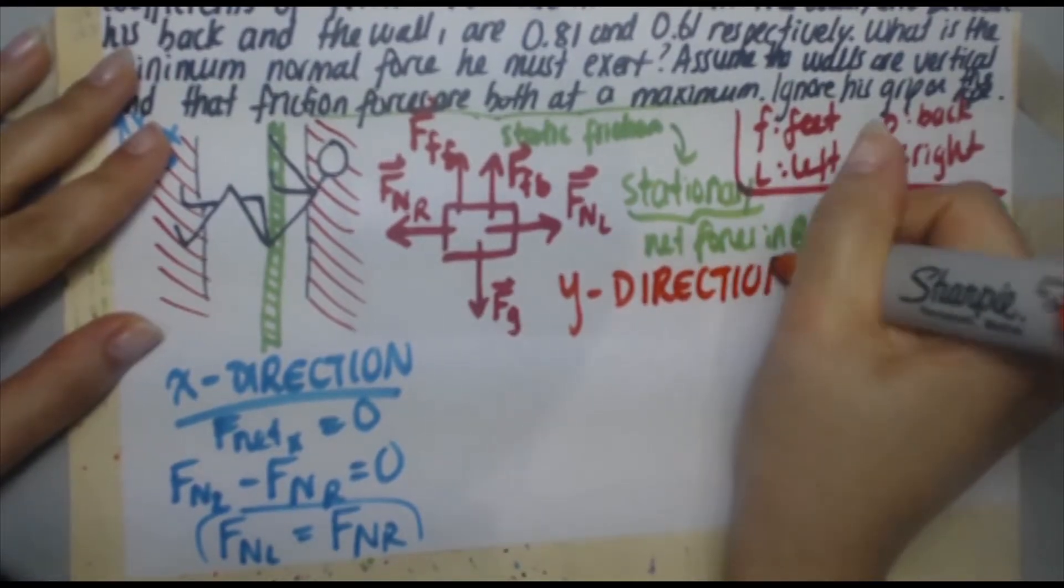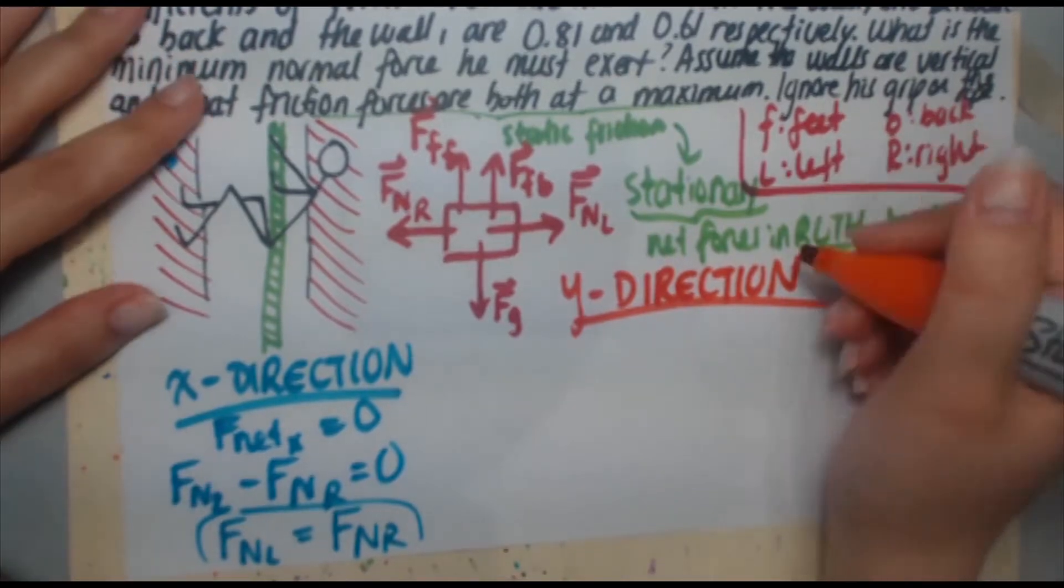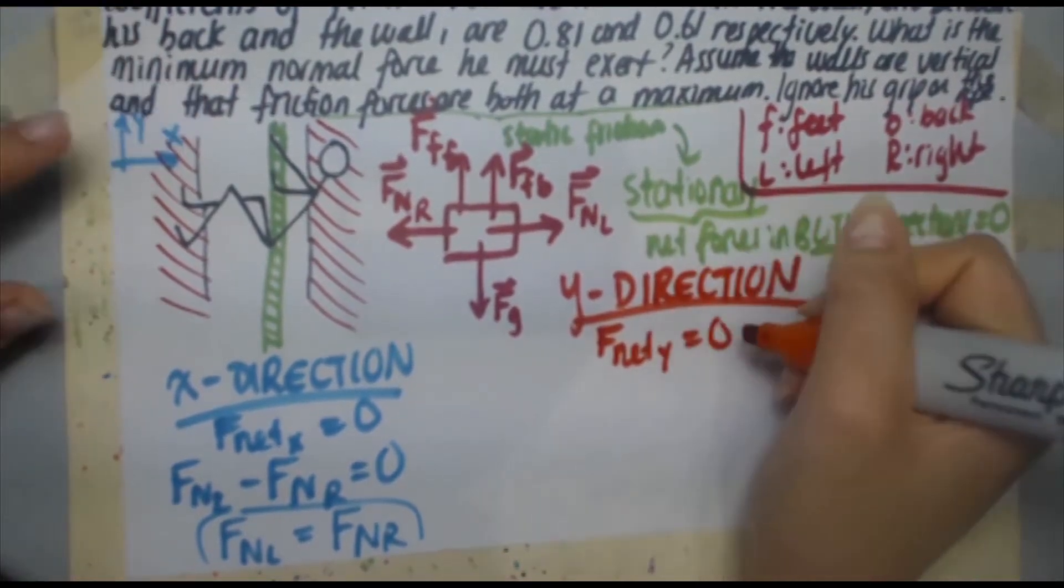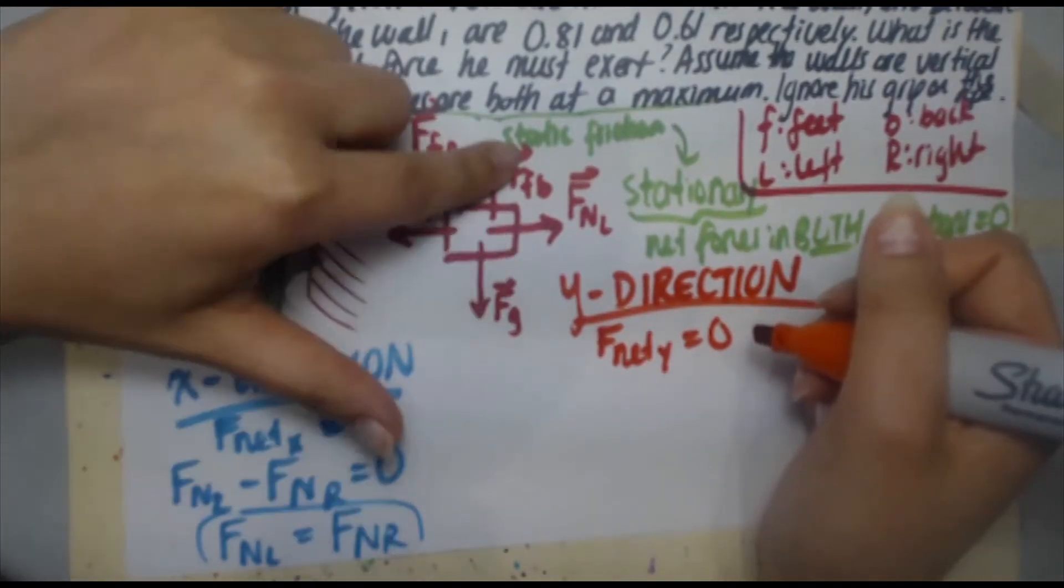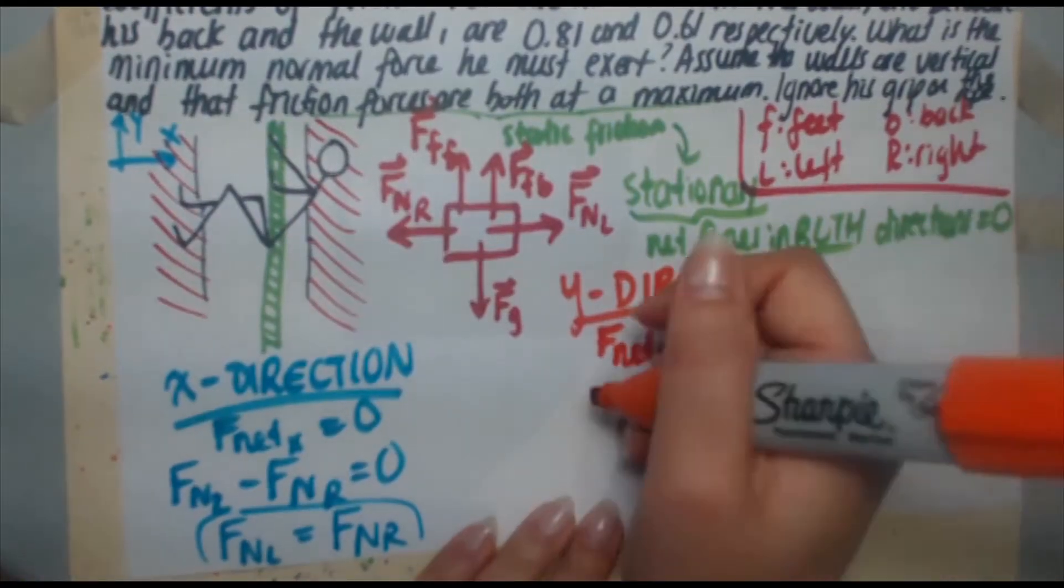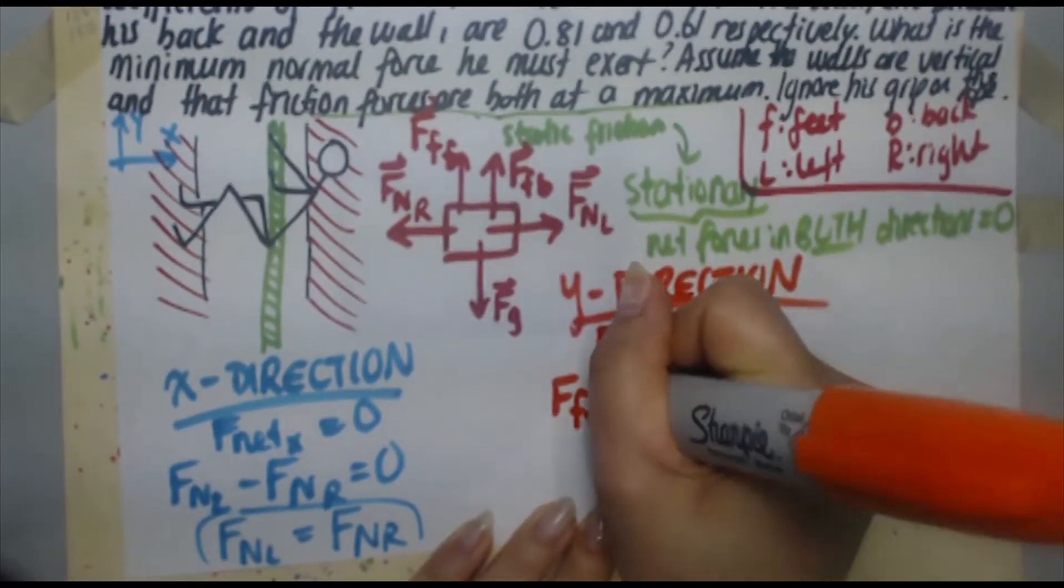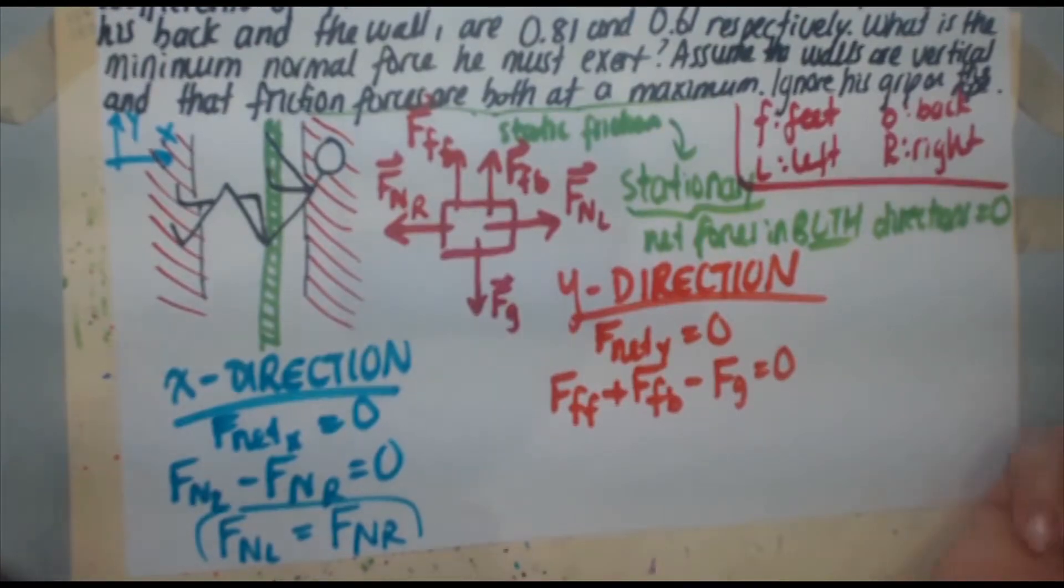In the y direction, we've got a few more forces. Well, one more. But it's really not that complicated. We're going to do the same thing. F net y equals zero. In our positive y direction, we've got force of friction on the feet, force of friction on the back. In the negative y direction, force of gravity. So we're just going to plug those in. So FFF plus FFB minus FG equals zero. Done.